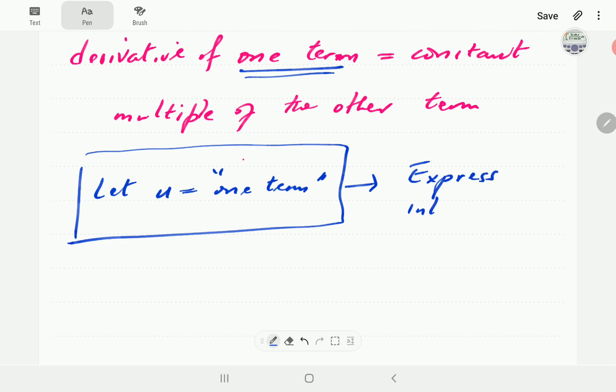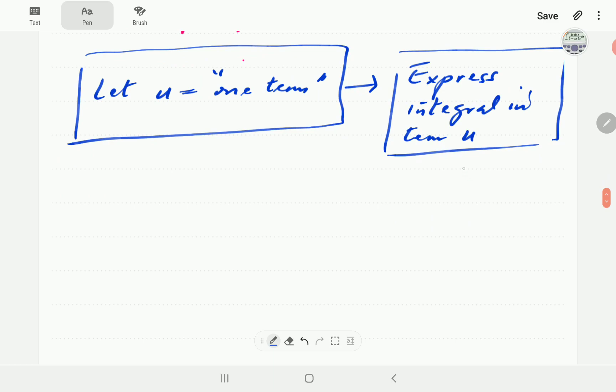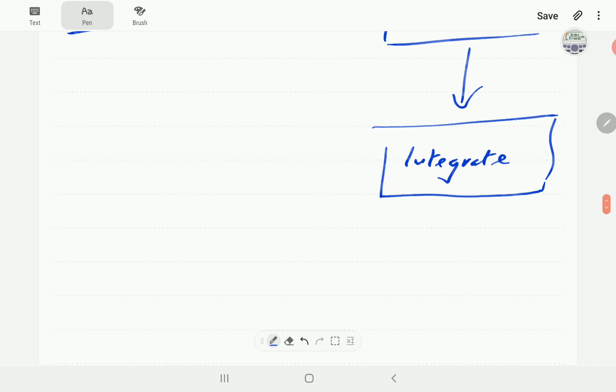We are going to express the integral in terms of u entirely. We're going to want to write everything in terms of u. That's step number two. Once we have done that, we should have a simpler integral. Then, we integrate that simpler integral. And then, once we get the integral...